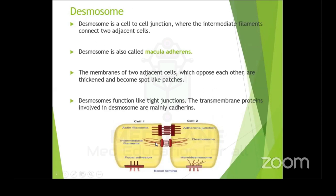Desmosomes are similar to adherens junctions — a cell-to-cell junction — but intermediate filaments connect both cells rather than actin. Desmosomes are also called macula adherens. Under electron microscopy, the membranes of adjacent cells appear thickened with spot-like patches. The proteins making up desmosomes are also cadherins.